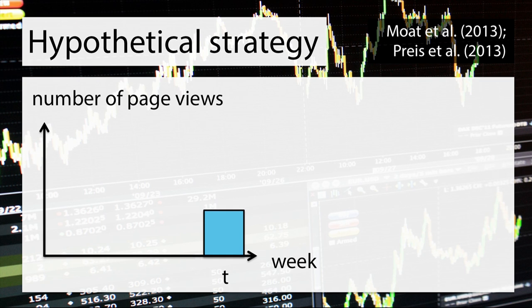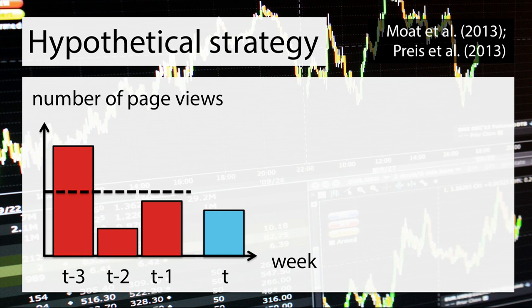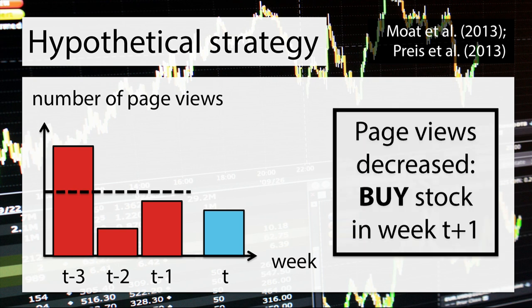And the strategy works like this. Let's take a company listed in the Dow Jones — Bank of America, for example. We looked at the Bank of America Wikipedia page in a given week, which we're going to call week T, and we counted how often people had looked at that page. And we compared this to how often people had looked at this page in the previous three weeks on average. If we found that people had looked at the Bank of America page less in week T in comparison to the previous three weeks, then we bought stock at the beginning of week T plus one and sold it again the week later.